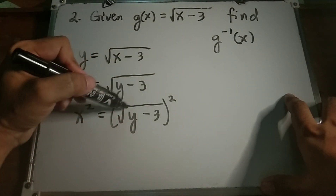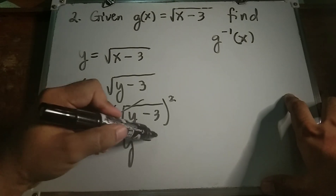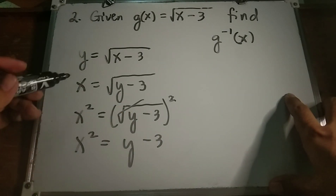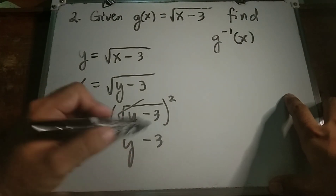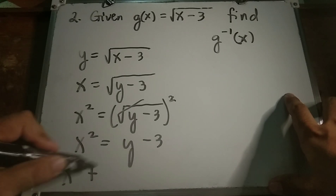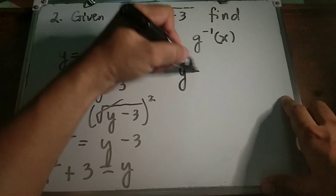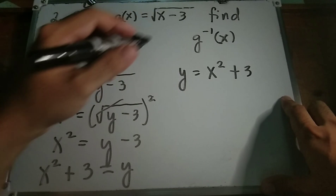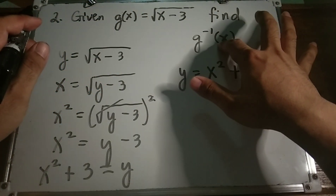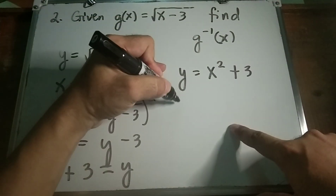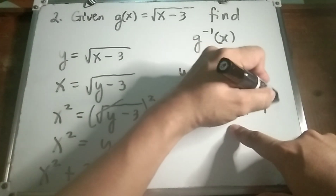The radical sign is eliminated, so x squared equals y minus 3. Then solve for y by moving negative 3 to the left side: x squared plus 3 equals y, or y equals x squared plus 3. Now replace y with the inverse function notation, so the inverse function of g of x equals x squared plus 3.